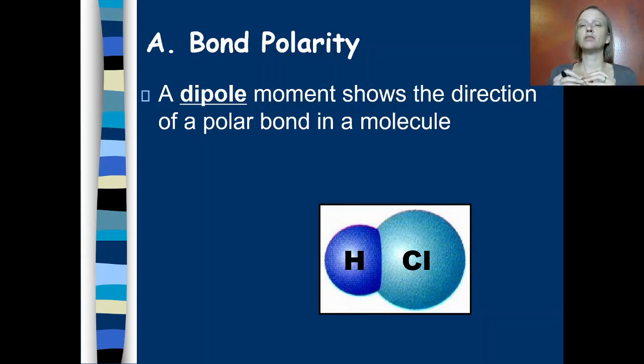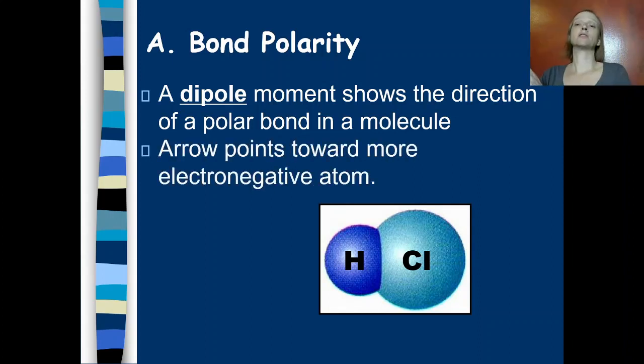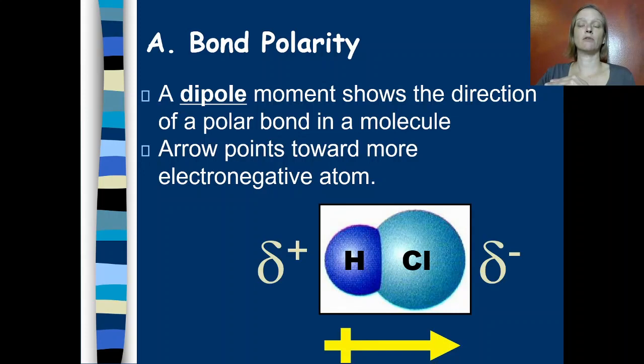We need to talk about bond polarity first. A dipole moment shows the direction of a polar bond in a molecule. Here I'm showing you a polar bond. Chlorine is very electronegative, hydrogen is very not electronegative. So electrons spend more of their time around chlorine than around hydrogen. So we're going to represent this polar bond by adding an arrow to the diagram, and the arrow is going to point towards the more electronegative atom. So there is a dipole, there's a lopsidedness to this molecule, and we draw the arrow to show where the electron spends most of its time.